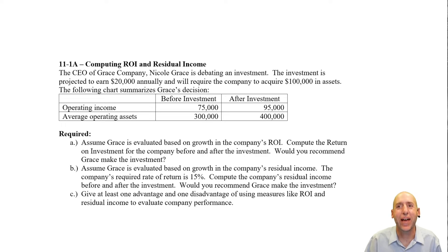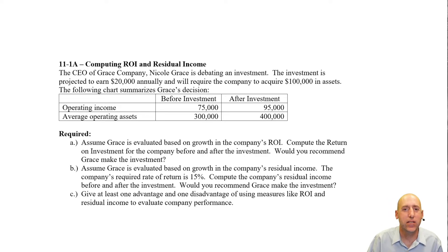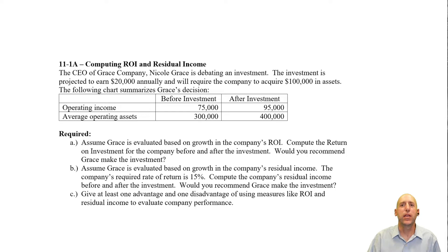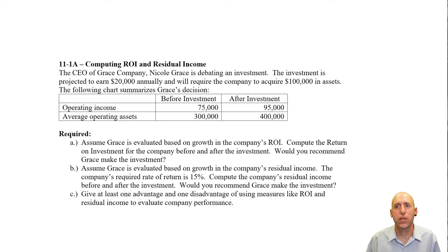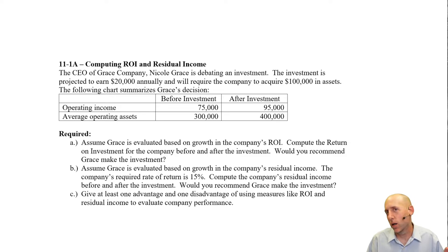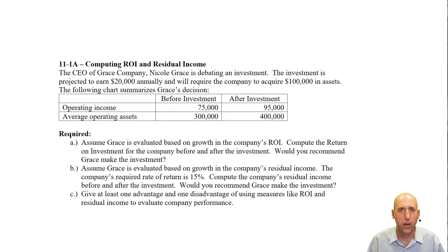Let's take a look at problem 11.1a. This is about ROI and residual income. These are what I would call summary measures of performance — you want to know how your company's doing in one number? ROI is a very common one.